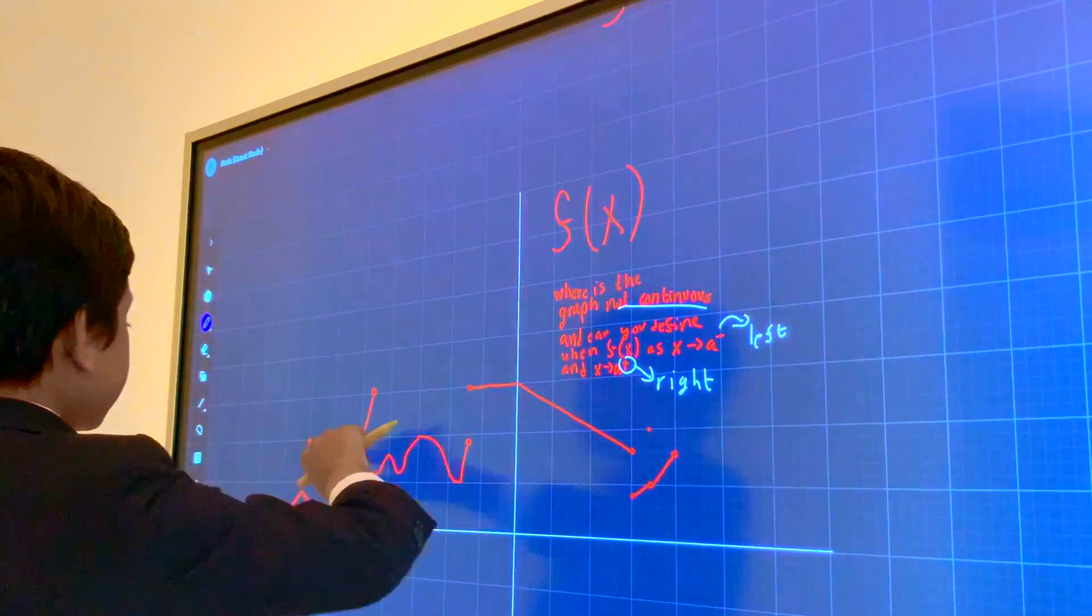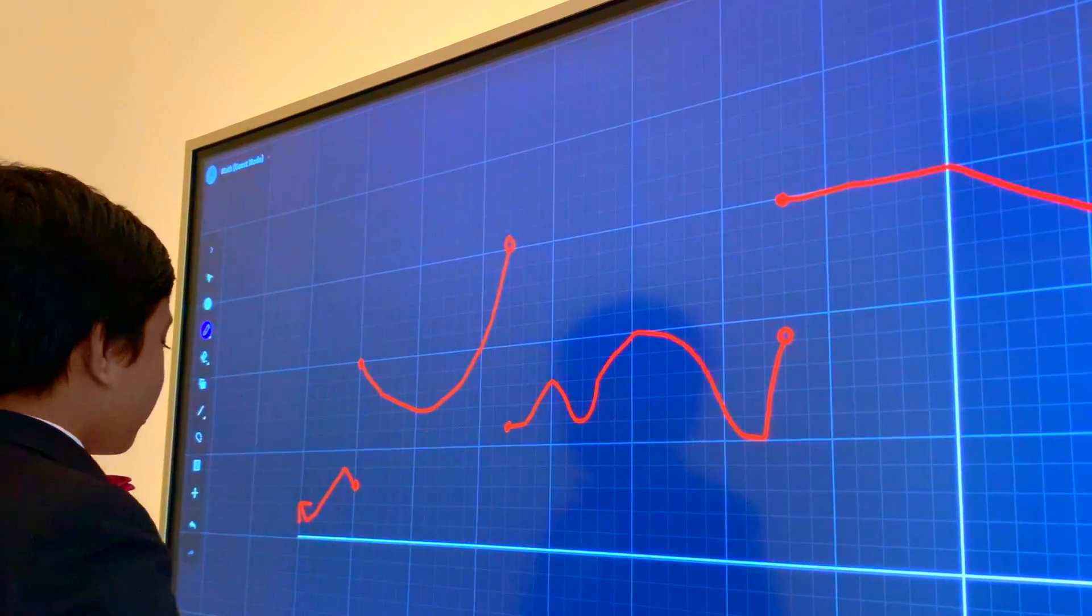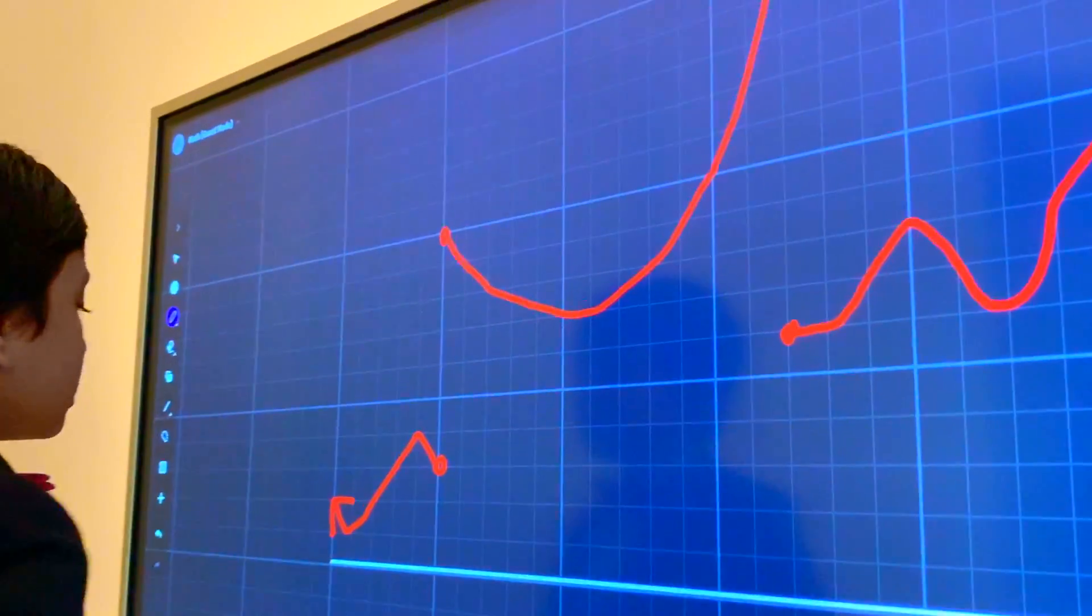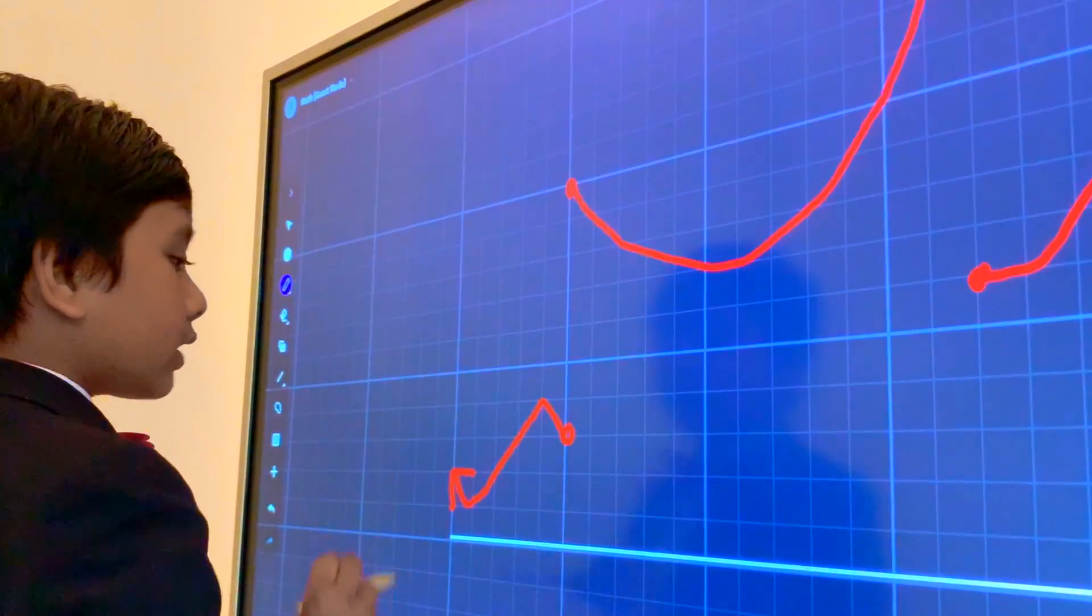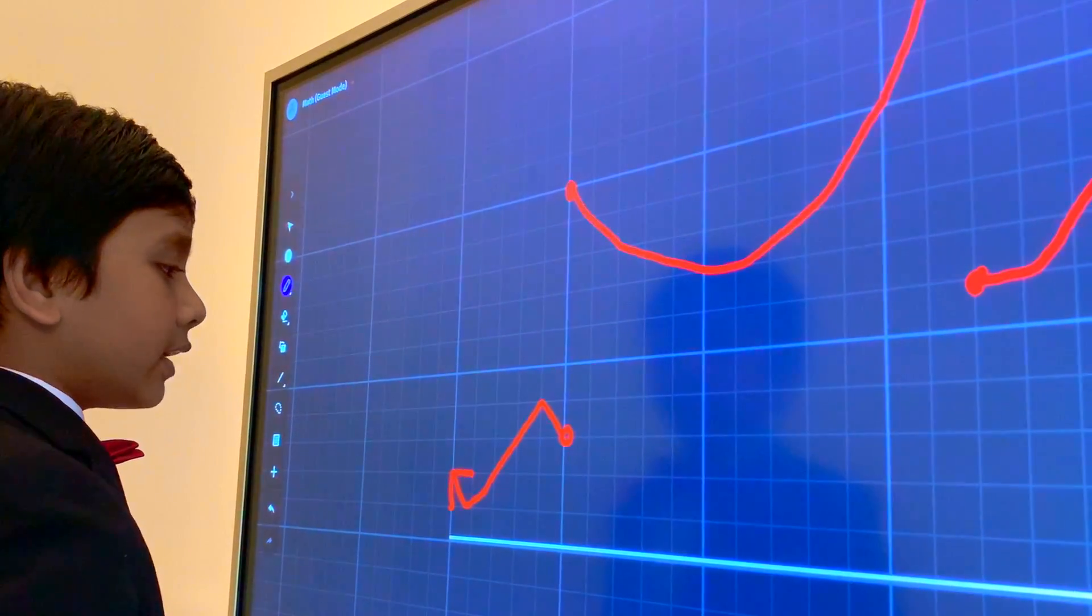So first, let's define where it's not continuous, at least from what we have right over here. So what do we have right over here? It looks like this goes in another direction, so it's perfectly continuous from there.